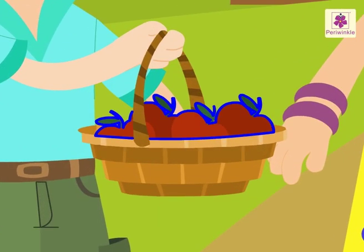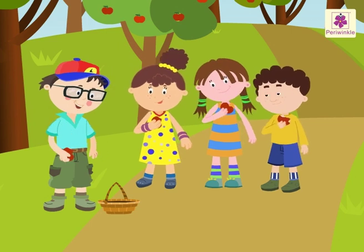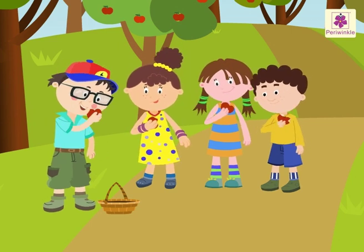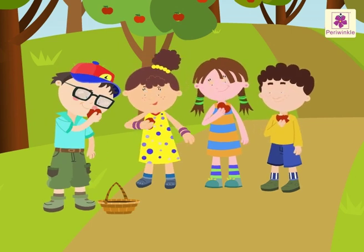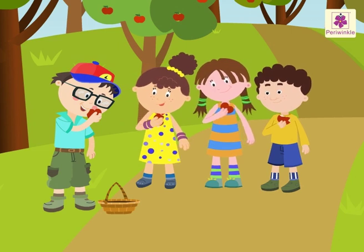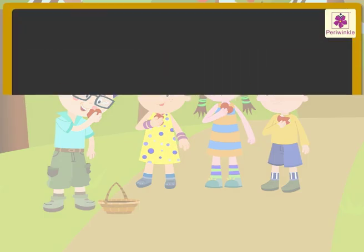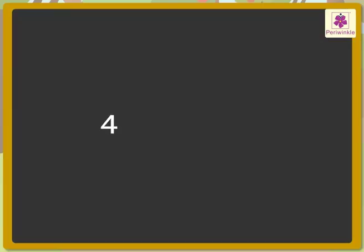There are four kids and four apples. Accordingly, each kid gets one apple. So we have divided the number four by four and got the answer as one. This shows us that when a number is divided by itself, the quotient is one.